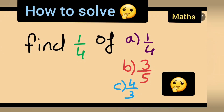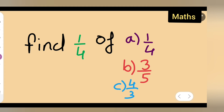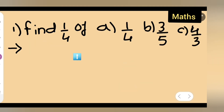In today's math class, let us find one upon four of: a) one upon four, b) three upon five, and c) four upon three. This is a very interesting kind of problem from class seventh. So the question is: find one upon four of a) one upon four, b) three upon five, and c) four upon three.